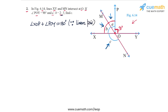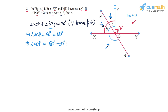Now, we know that angle POY is 90 degrees. So this means that angle XOP plus 90 degrees equals 180 degrees, and from here we get angle XOP as 180 minus 90, or 90 degrees. So we get the interesting conclusion that angle XOP is 90 degrees. But angle XOP is nothing but the sum of A and B — this angle A plus this angle B equals angle XOP — and this means that A plus B equals 90 degrees. We also know that A to B is 2 to 3.